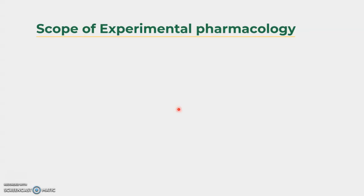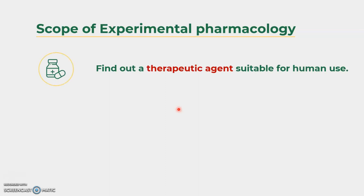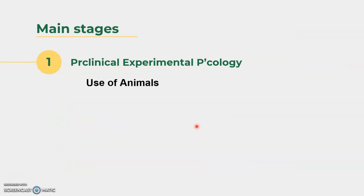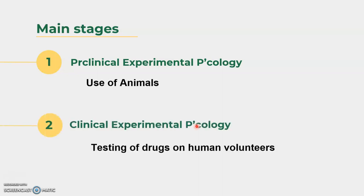What is the scope of experimental pharmacology? It is helpful to find out therapeutic agents suitable for human use — therapeutics means treatment. It also involves the study of toxicities of drugs and the study of the mechanism of drugs. Experimental pharmacology is divided into two main stages: pre-clinical, which is the study of drug effects on animals, and clinical, which is the testing of drugs on human volunteers.